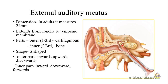Since it is an S-shaped tube, the direction of each part differs. The outer cartilaginous part of the meatus is directed inwards, upwards, and backwards, whereas the inner bony part is directed inwards, downwards, and forwards.